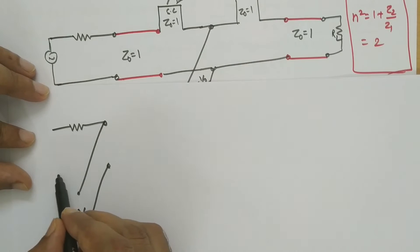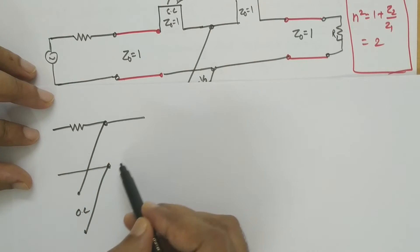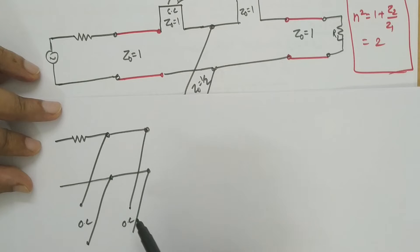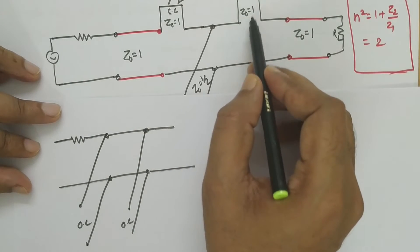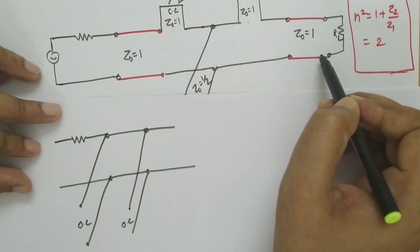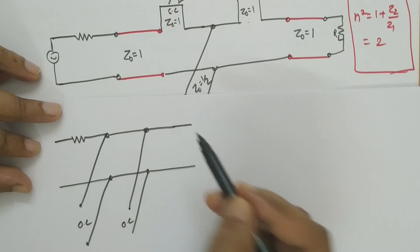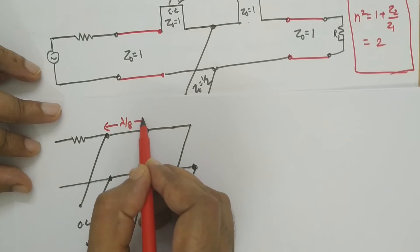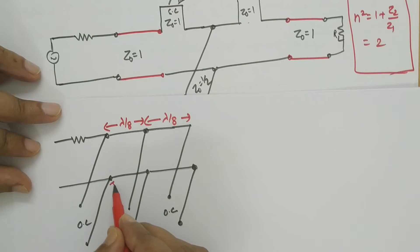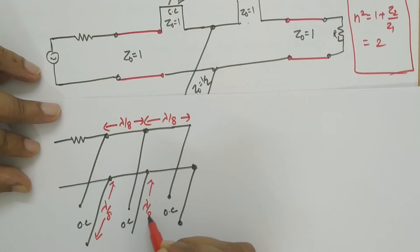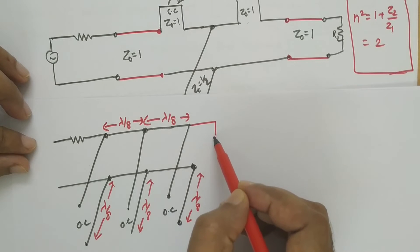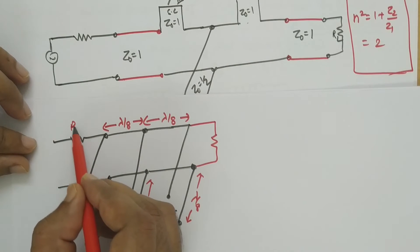After applying Kuroda's identity, the series stubs move to become shunt open-circuit stubs. On the left side: an open-circuit shunt stub, then a transmission line section, then the middle open-circuit shunt stub which was already there. On the right side, the series stub also moves to become a shunt open-circuit stub beyond the added transmission line. The length of all added transmission line sections is lambda by 8, and all other sections are also lambda by 8. Finally the circuit is terminated with the load impedance.